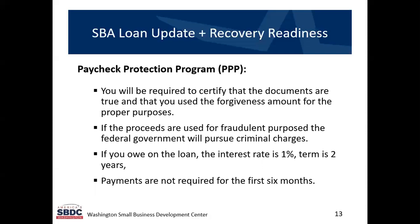As the owner of the business, the bank is going to have you certify that the documents you submit are true and correct and that you used the money the way it was supposed to be used — you'll sign an affidavit as the owner stating you used it properly. If any of these funds are used fraudulently, the federal government will pursue criminal charges. If a portion of this loan was not forgiven, it converts to a short-term loan with an interest rate of one percent and a payback period of two years, with no payments required in the first six months, though interest does accrue.